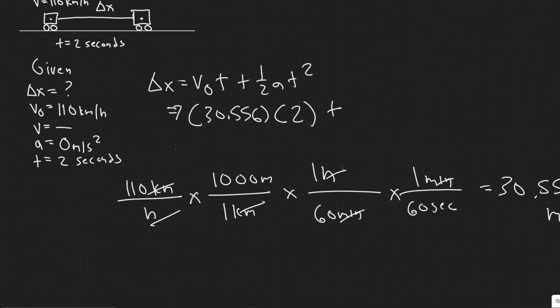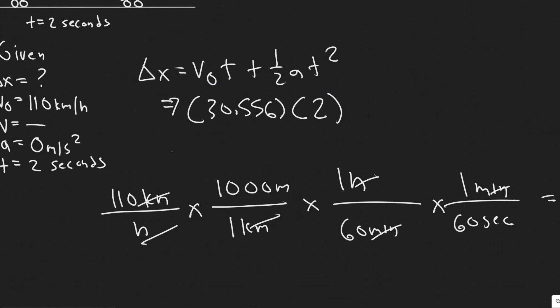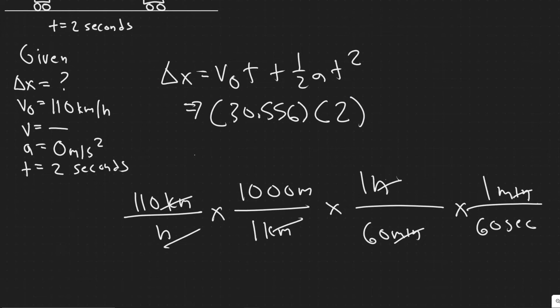and then notice a is actually zero. So one half times a is just zero. So this whole term is going to go to zero. So since you're not accelerating, really, all you have to do is just multiply by your initial velocity times how long the interval is.